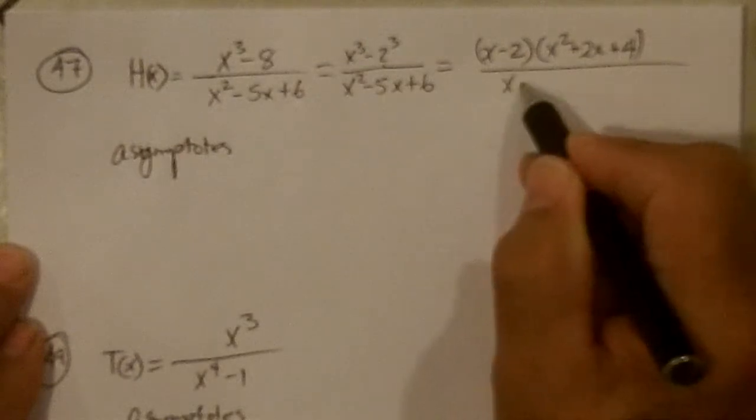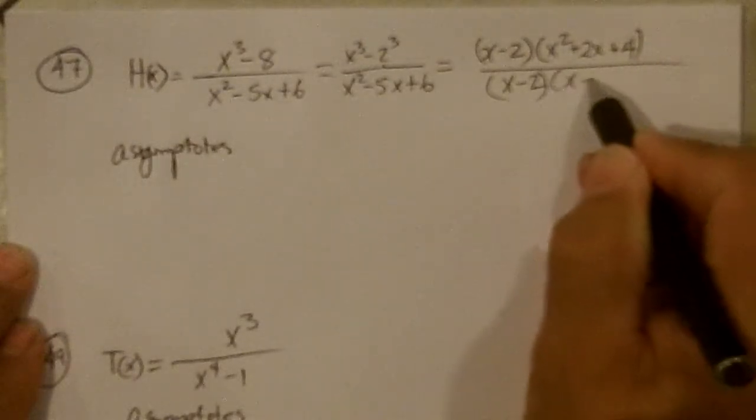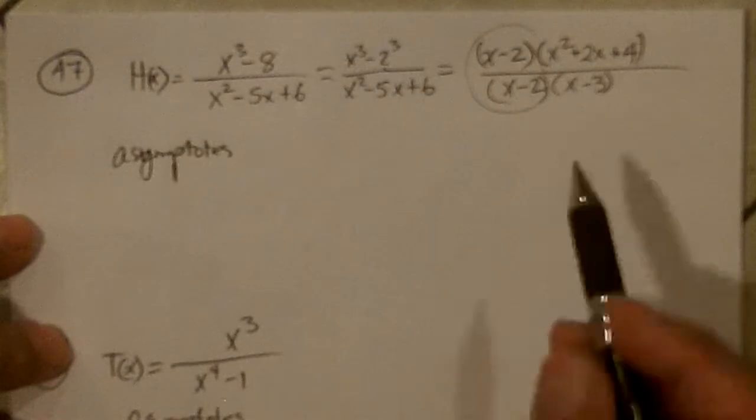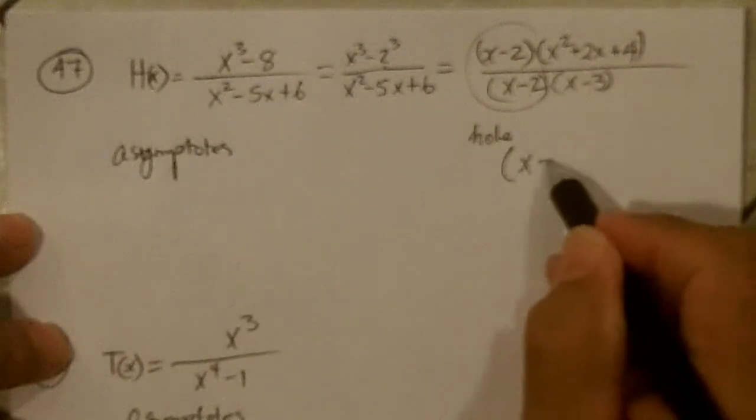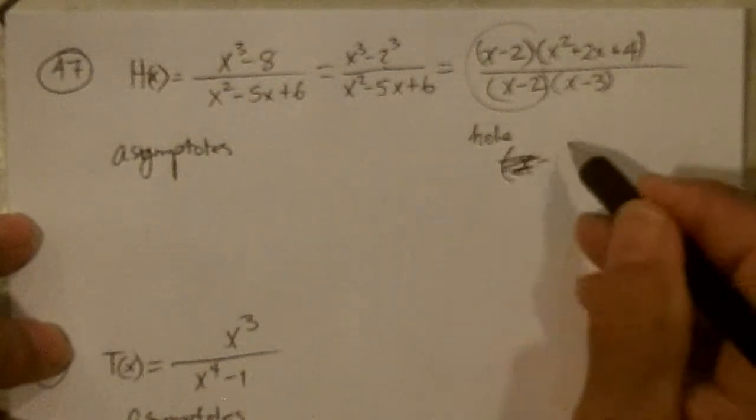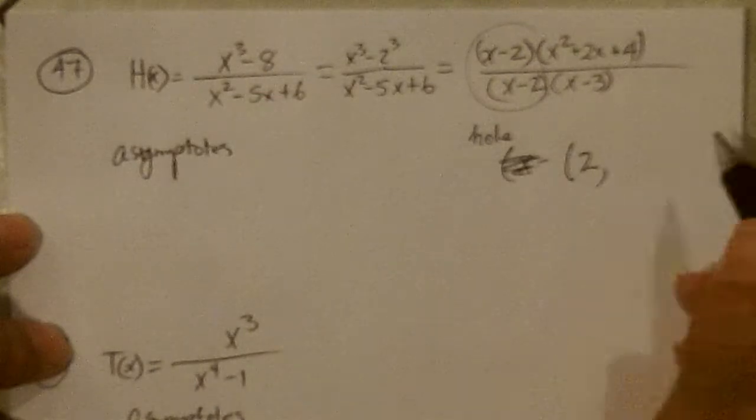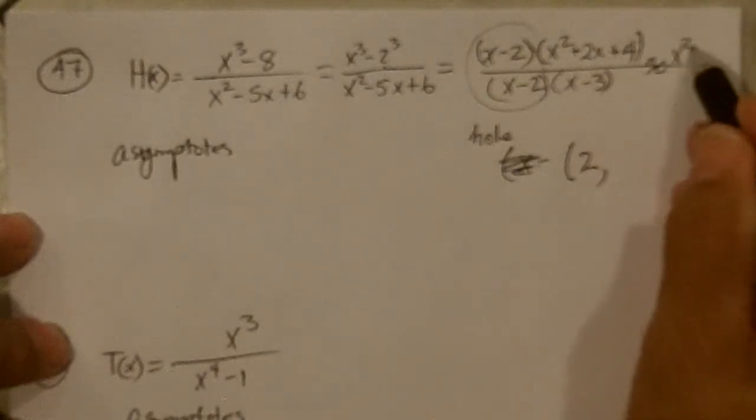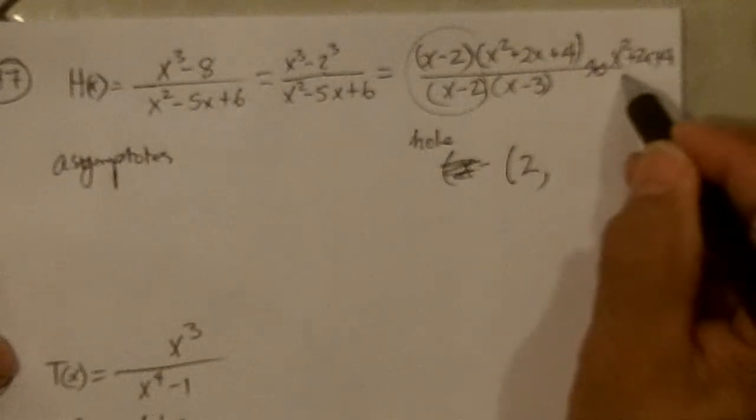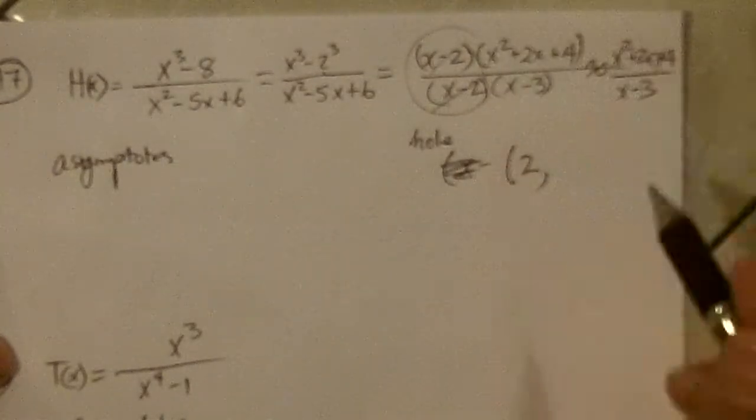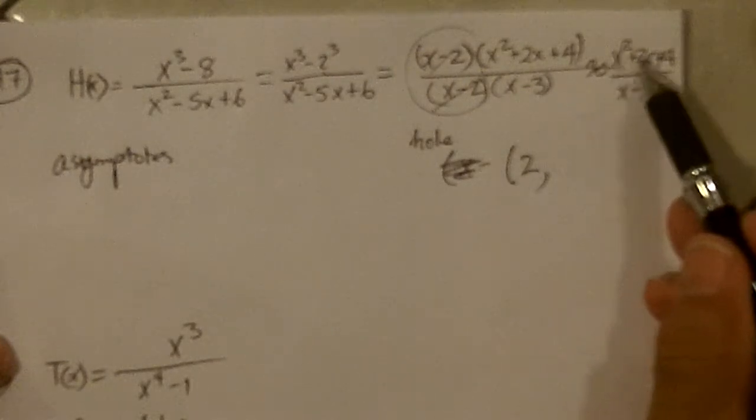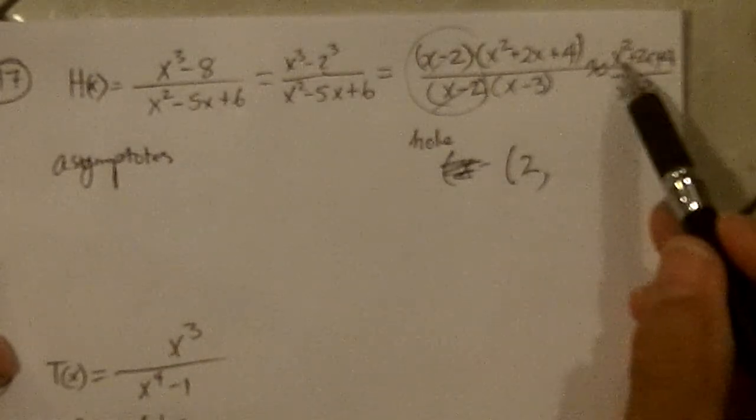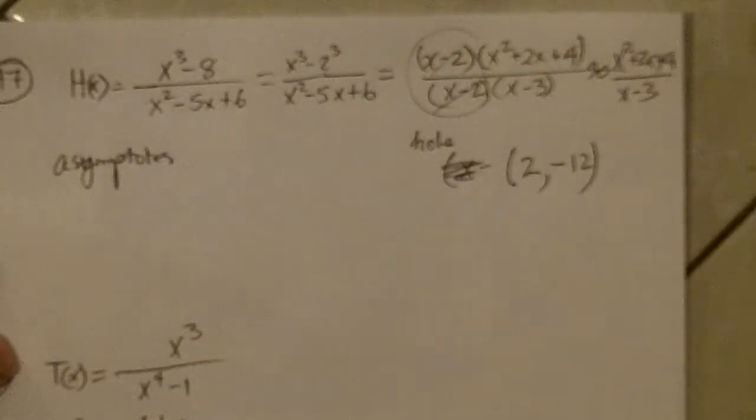This does factor to x minus 2 and x minus 3. And so we have a hole at x equals, a hole at x equals 2. And to find the y-coordinate of it, I put 2 into the reduced form that's similar, x squared plus 2x plus 4 over x minus 3, where these are cancelled out. And if I put 2 in there, I get 4 plus 4 plus 4 is 12 over 4, 2 minus 3 is minus 1. So I get 12 over minus 1, which is negative 12. That's where the hole is.